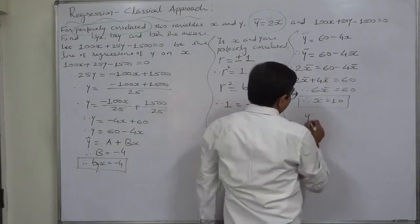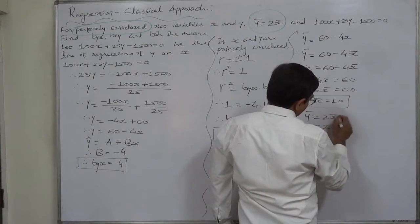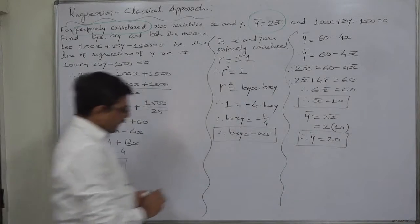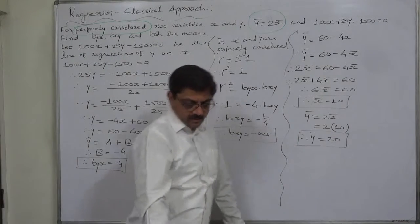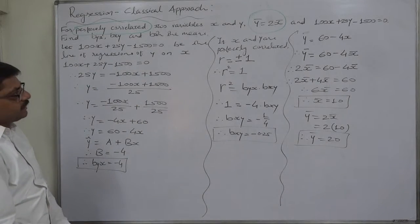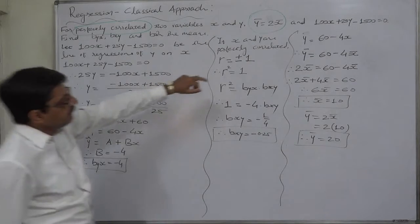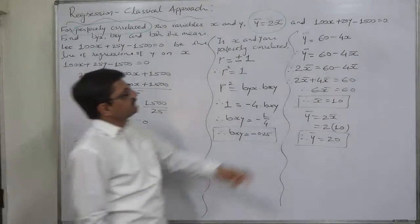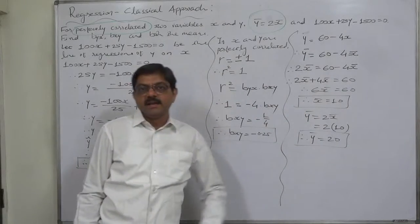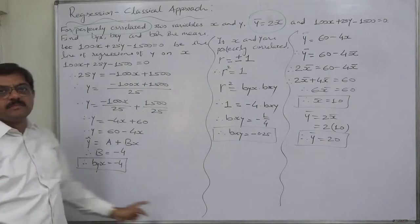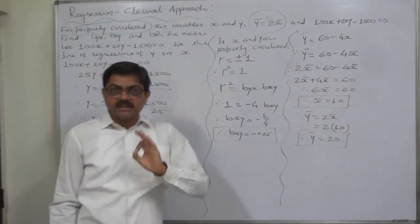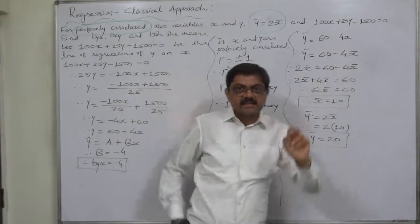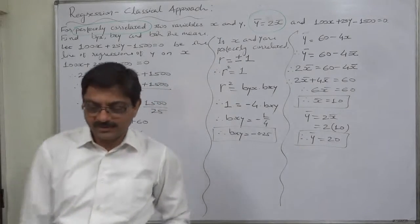Using the relationship y̅ equals 2x̅, we get y̅ equals 2 times 10, so y̅ equals 20. We now have all four results: byx equals minus 4, bxy equals minus 0.25, x̅ equals 10, and y̅ equals 20. One final note: we assumed the given equation is the line of regression of y on x. If we instead assume it is the line of regression of x on y, all the answers will be the same. I suggest you solve the problem again using that assumption. Thank you very much.